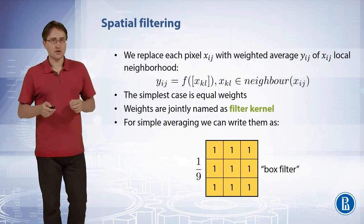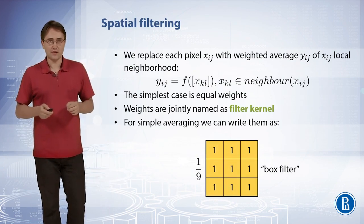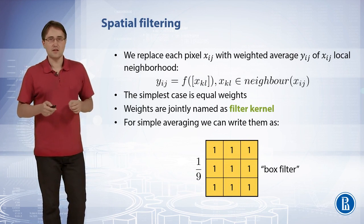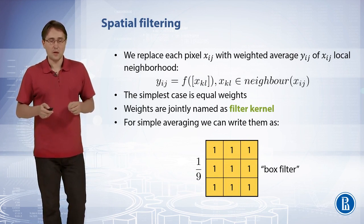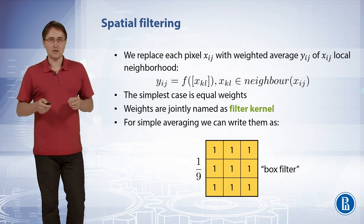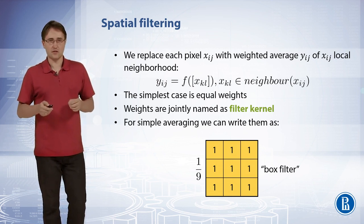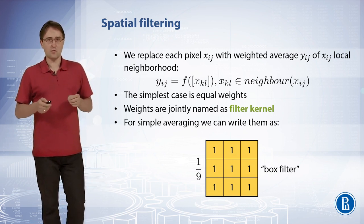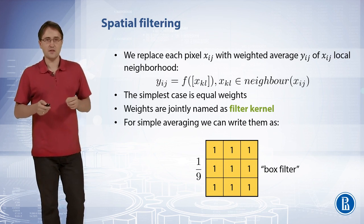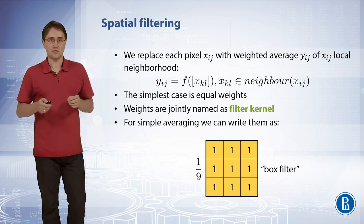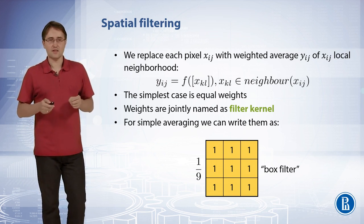Instead of averaging pixels in several images, we can replace each pixel x with a weighted average of its local neighborhood. Weights are jointly named a filter kernel. The simplest case is equal weights – this particular filter is called the box filter. The sum of all weights in a filter kernel should equal 1, so that applying the filter does not change the overall brightness of the image. For clarity, we can write the common factor separately.